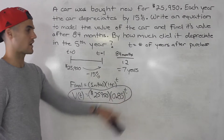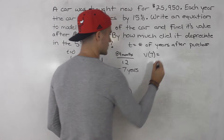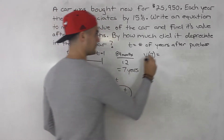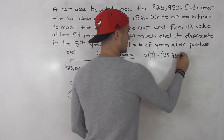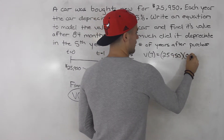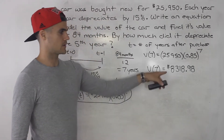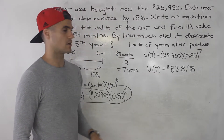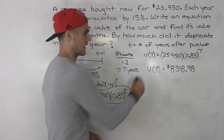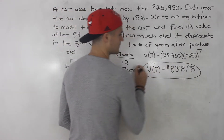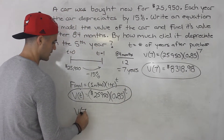They're asking for the value of the car after seven years, so we plug in 7 for t: V(7) = 25,950 × (0.85)^7. When you calculate that, you get $8,318.98. That is the value of the car after 84 months, or after seven years.